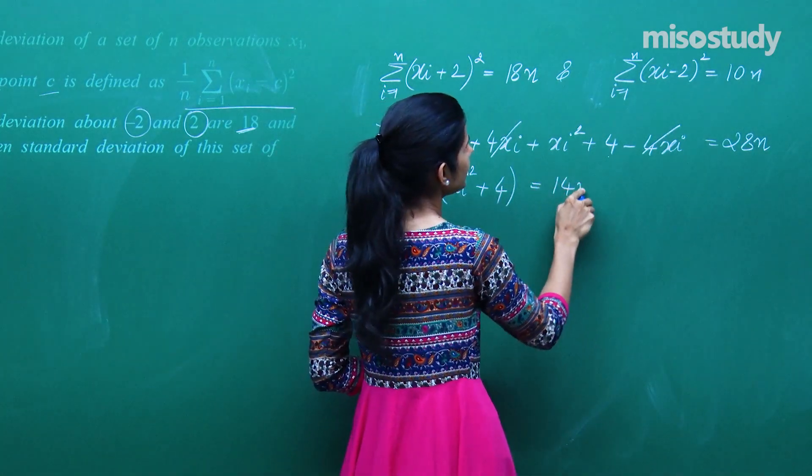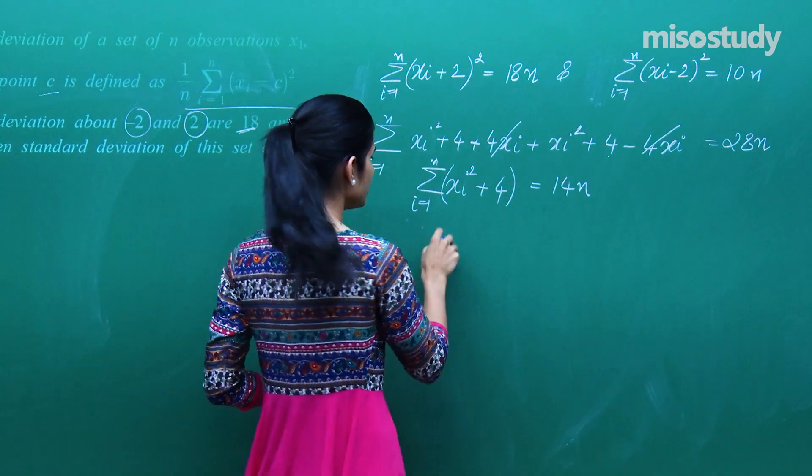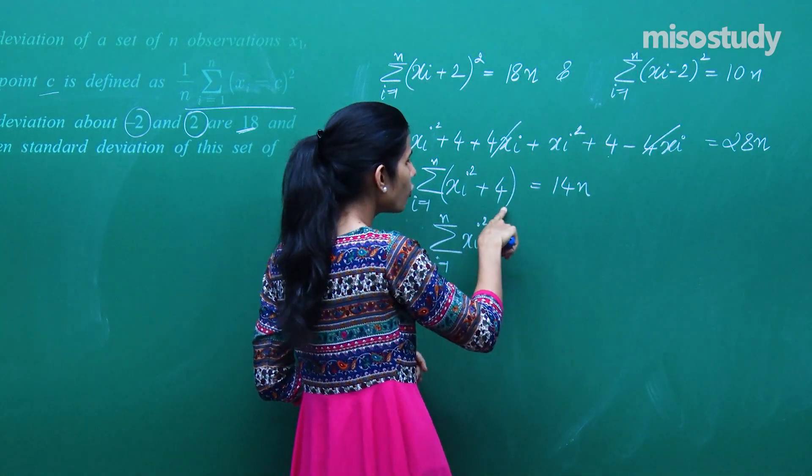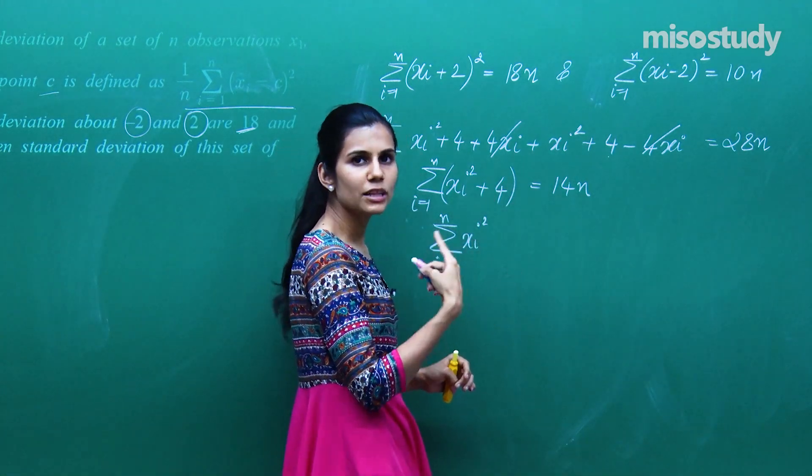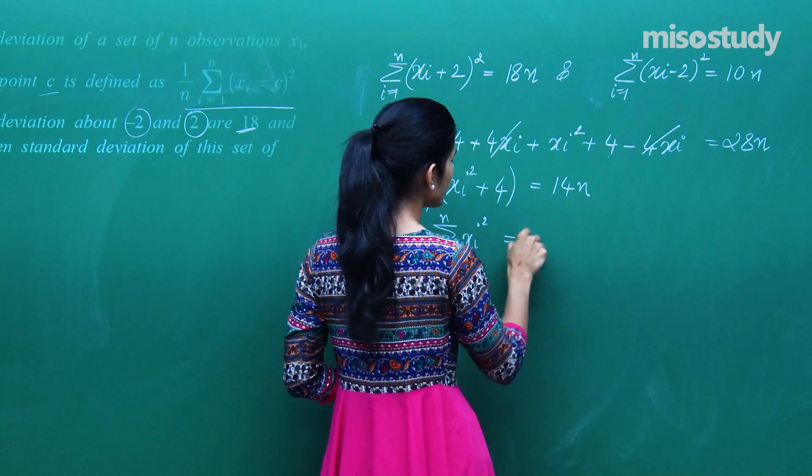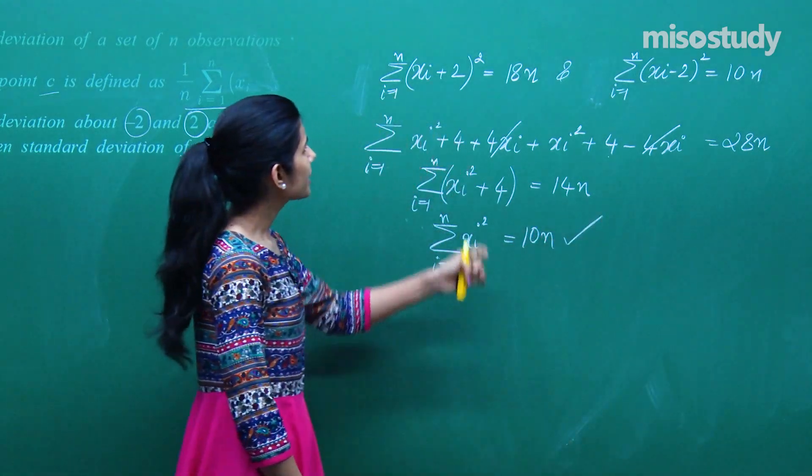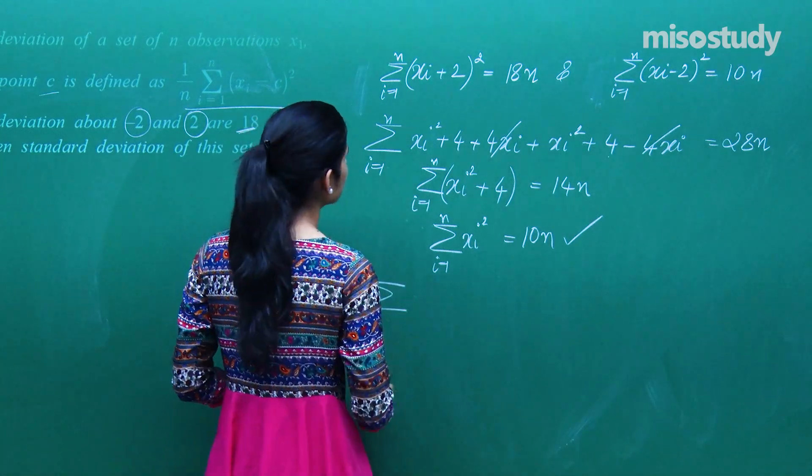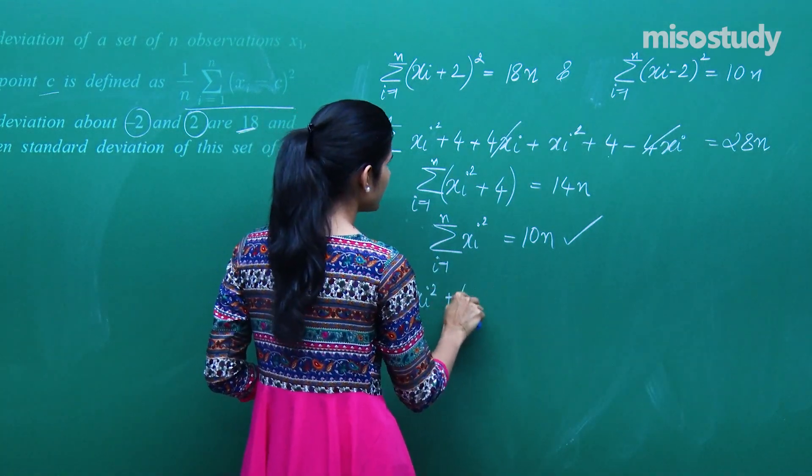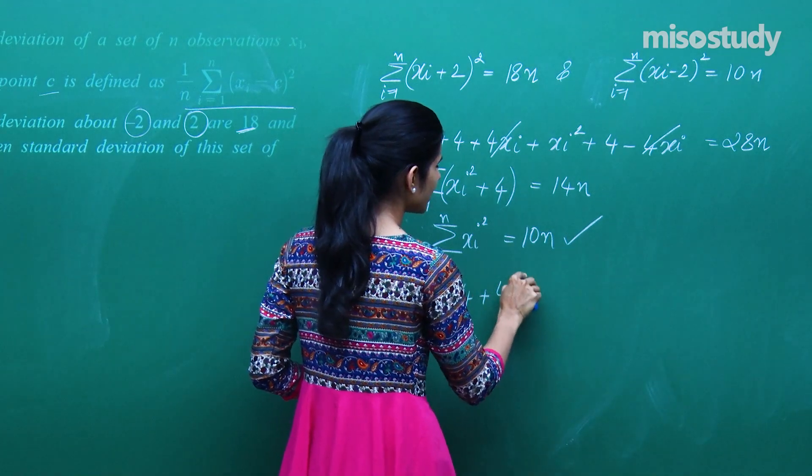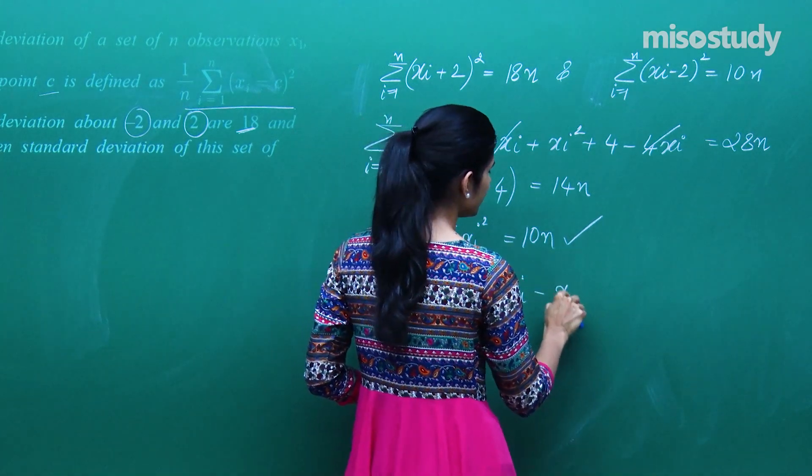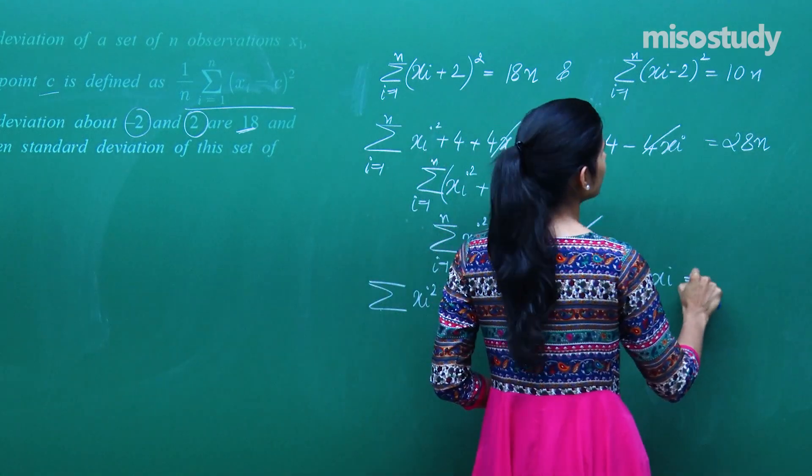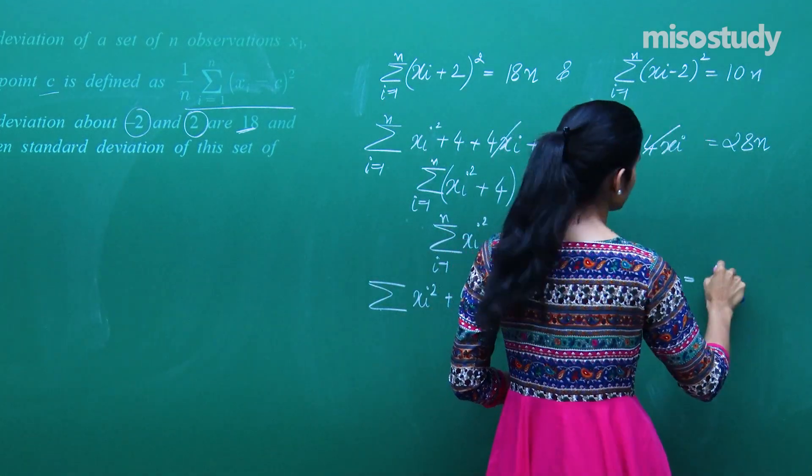We are left with xi square plus 4 summation i going from 1 to n. This is equal to 14n. Summation distribute karo ge kya aega? Summation i going from 1 to n xi square plus 4 times summation i going from 1 to n matlab 4n. 14n minus 4n gives you 10n. Ab kaam karte hain indhoon ko subtract kar lete hain. Subtract karo ge toh kya aega? Xi square plus 4 plus 4xi minus xi square minus 4 plus 4xi.